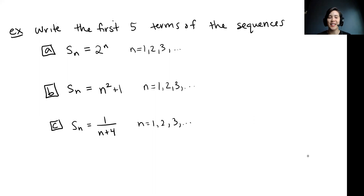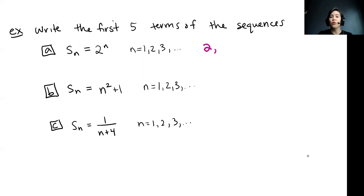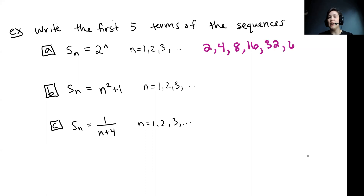Let's go through part A together. When we plug in n equals 1, our first term is 2 to the 1, which is 2. The second term is 2 squared, or 4. The third term is 2 cubed, so we get 8. The fourth term is 2 to the 4th, giving us 16. The fifth term is 2 to the 5th, giving us 32, and we could keep going. That's part A — the first five terms of that sequence.